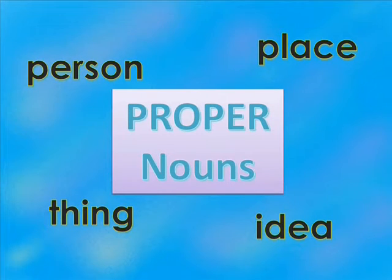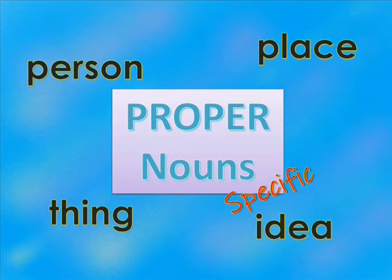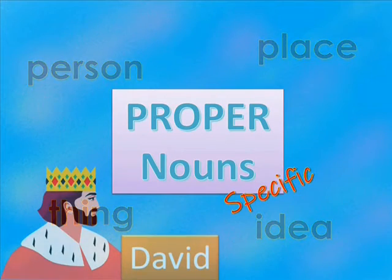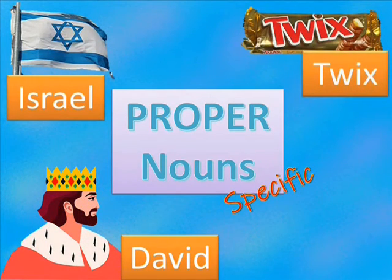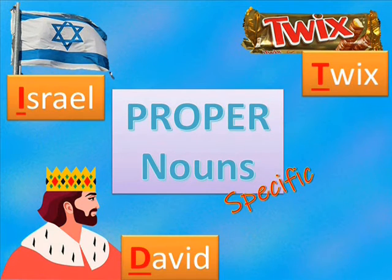A proper noun is a specific name of a person, place, thing, or idea. Examples of proper nouns are David, Israel, and Twix. Proper nouns always start with a capital letter wherever they fall in the sentence.